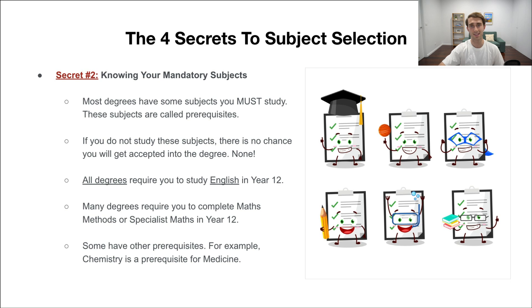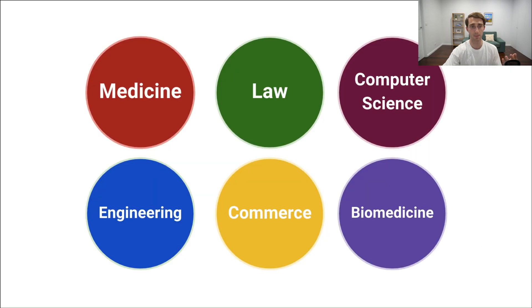The other reason is there's a number of mandatory subjects you have to study if you want to get into these degrees. For example, with medicine, if you don't study chemistry, it doesn't matter how well you do in all your other subjects. It doesn't matter if you get a 99.95 ATAR score, you will not get into medicine because you haven't studied what they call a prerequisite.